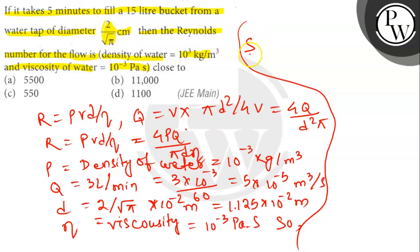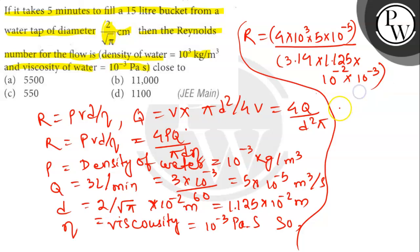So R equals 4 × 10³ × 5 × 10⁻⁵ divided by 3.14 × 1.125 × 10⁻² × 10⁻³.